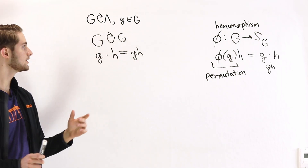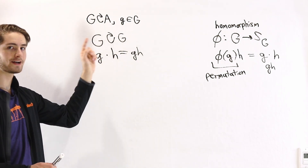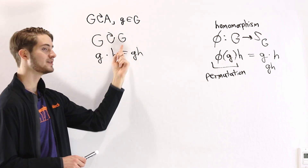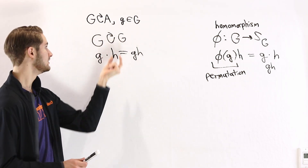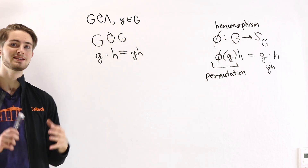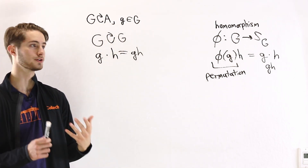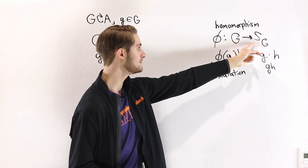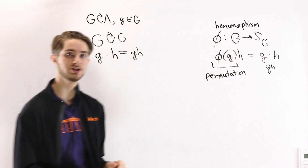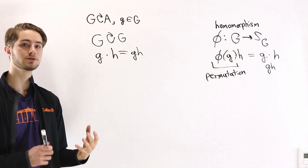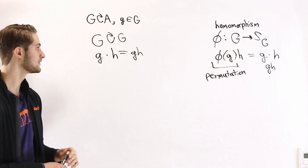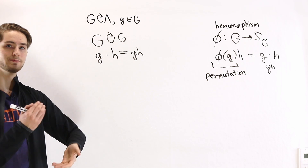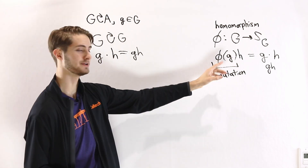When we look at G acting on G, this second instance of G we treat just like a set — we're looking at the set of elements that are in the group. So when we say the symmetric group on G, we mean the symmetric group on the elements of G. Thus φ(g)(h) is permuting the elements in the group, and that's what this map is describing.